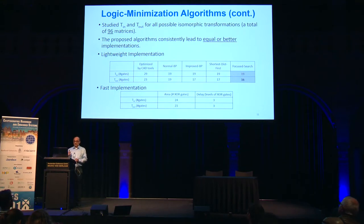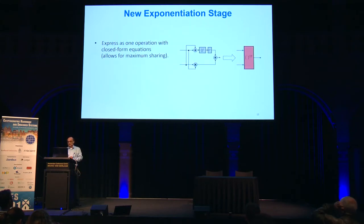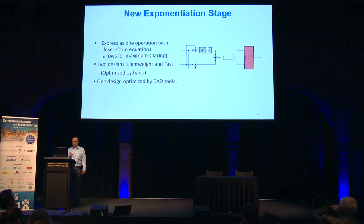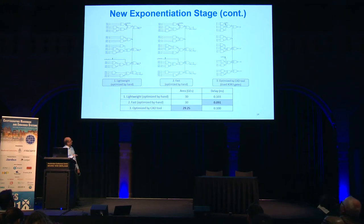Next, I'll talk about our composite field inversion. The new exponentiation stage combines sub-blocks as one block. We designed two versions — one for lightweight and one for fast — and optimized them by hand and using the CAD tool. The results are shown here; we implemented on ASIC. The lightweight and fast versions optimized by hand are shown, along with the version optimized by CAD tool. In our hand-designed version, we considered three-input XOR gates as simply two cascaded two-input XOR gates.